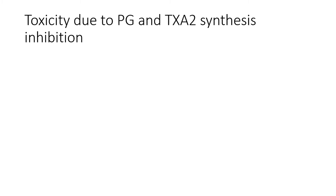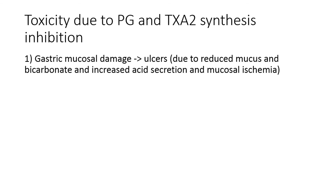A really important toxicity to remember is gastromucosal damage, which can lead to ulcers and blood loss. This is due to decreased levels of gastroprotective prostaglandins, resulting in reduced mucus and bicarbonate secretion, as well as increased acid secretion and mucosal ischemia. To counteract this, we can administer acid secretion inhibitors such as proton pump inhibitors and H2 receptor antagonists, or prostaglandin analogs such as misoprostol to replace the lost prostaglandins in the GI tract.